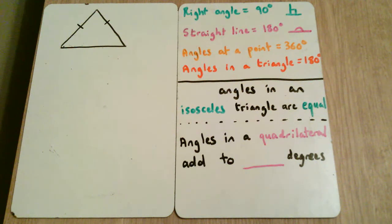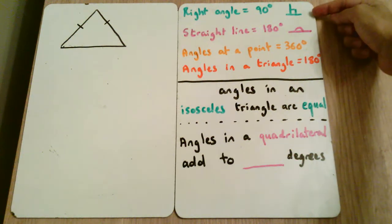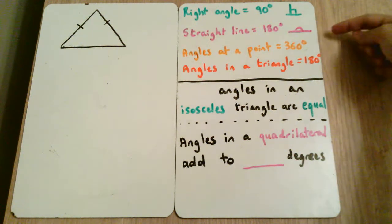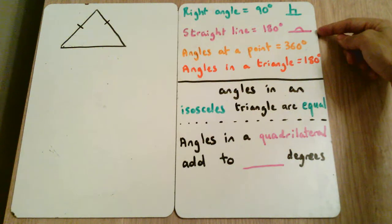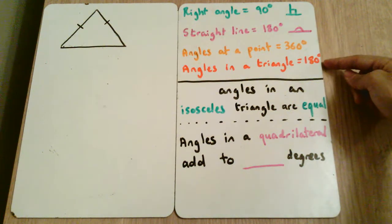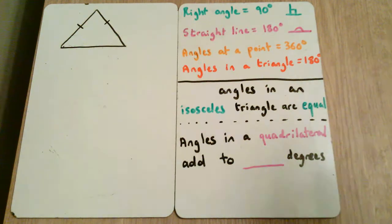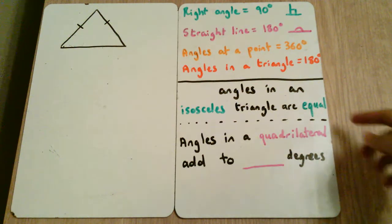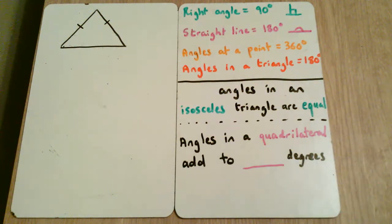In our first video we looked at four key points: a right angle made a 90 degree angle; angles on straight lines added up to make 180; angles at a point added up to make 360 degrees; and angles in a triangle added up to make 180 degrees. For today's video we're going to build on these facts and link it to isosceles triangles and quadrilaterals.